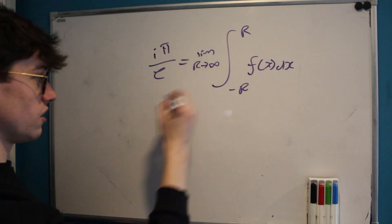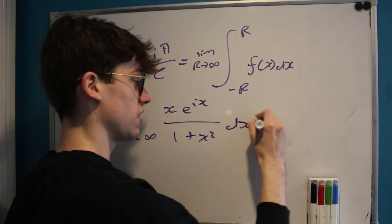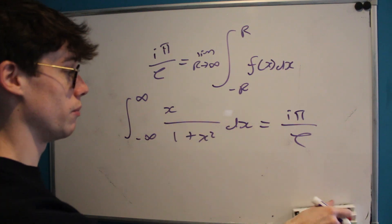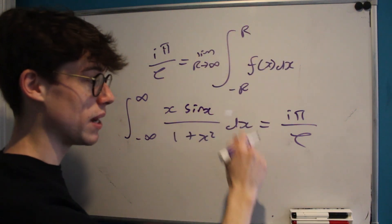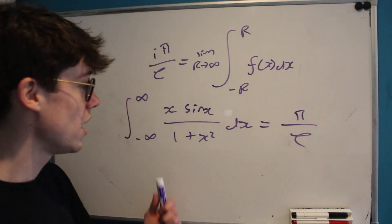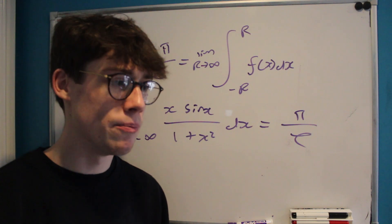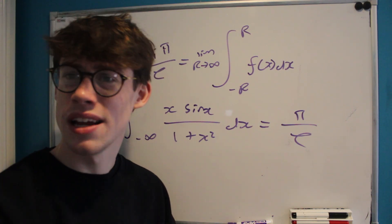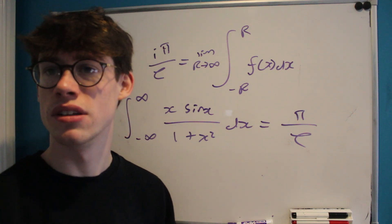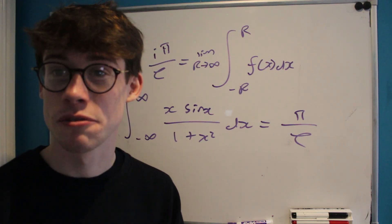Returning to our equation: iπ over e equals the limit of the integral from negative r to r of f(x) dx plus the integral along gamma, which we've shown goes to zero. So the integral from negative infinity to positive infinity of x e to the ix over 1 plus x squared equals iπ over e. Taking the imaginary part on both sides: the imaginary part gives us sin x in the integrand, and the imaginary part of iπ over e is π over e. So this seemingly monstrous integral equals π over e. Hope you've enjoyed this video — thanks again for 5,000 subscribers, and I'll see you soon!